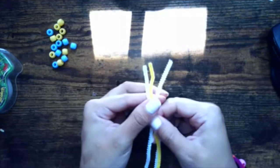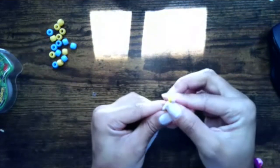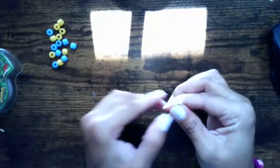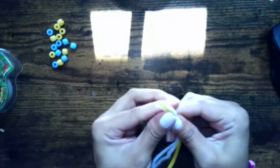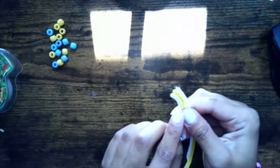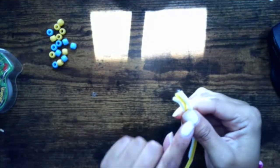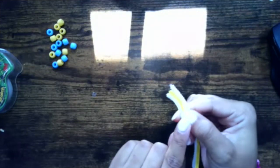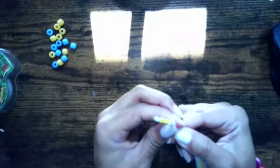So first you're going to begin with the ends of your pipe cleaner and you want to make sure that they're all matched up evenly. Then you're going to take the end and you're going to twist it about an inch, or right to where my thumb is, so you have an end to your bracelet.